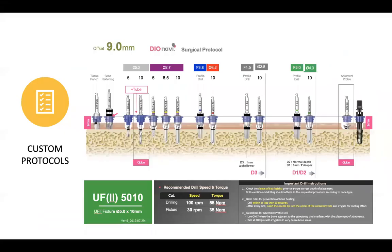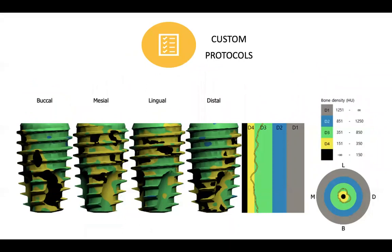Another point, custom protocols. If you're just tuning in now, this is what a drilling protocol looks like from DIO. It shows you in a picture form, every drill, the depth that you push it to. Notice on the bottom where it says D3, D1, D2, they give you like a highway different exit points where you can jump off the drilling highway based on bone density.